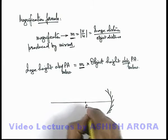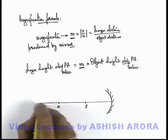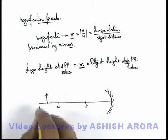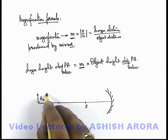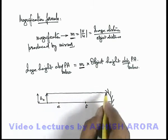And an object is placed beyond center of curvature, which we already studied. This is height of object which is taken as h_o.